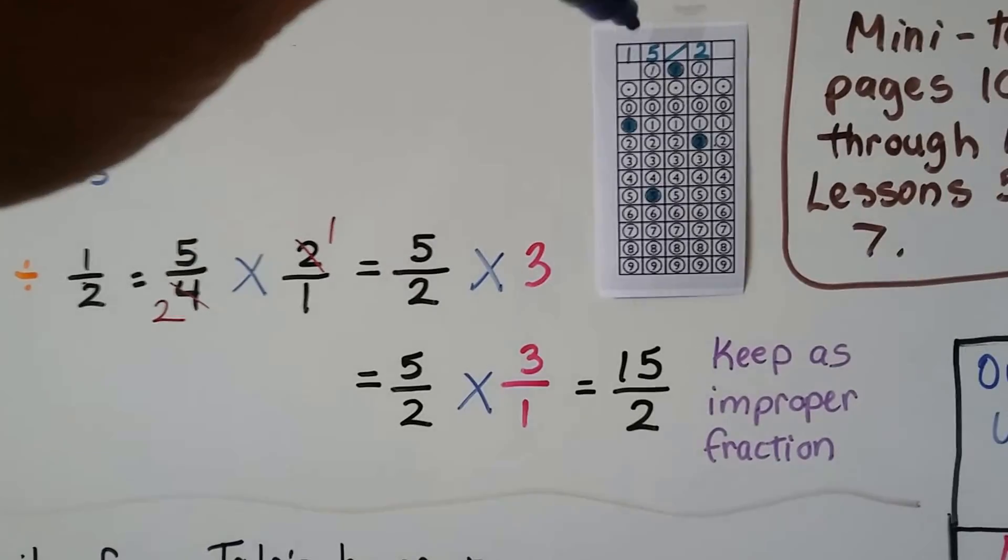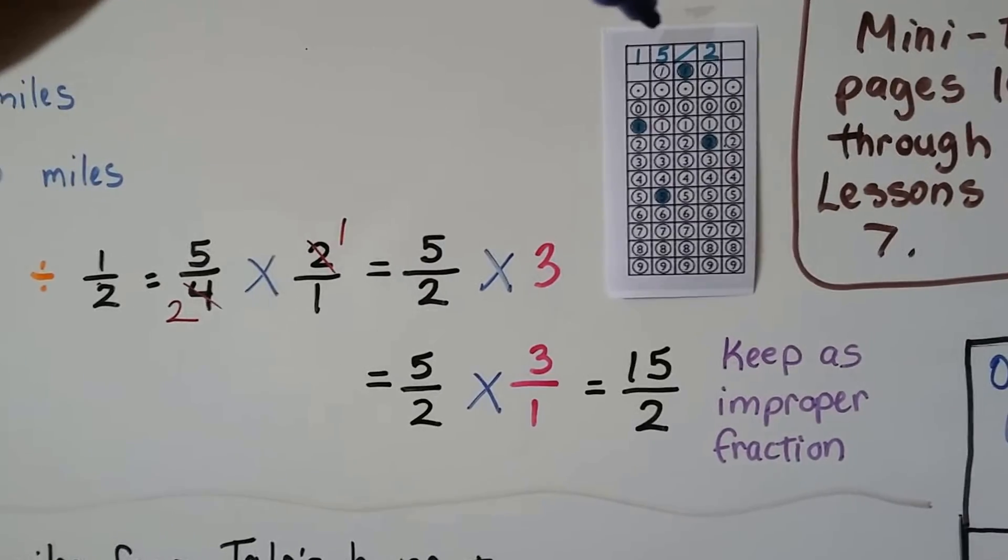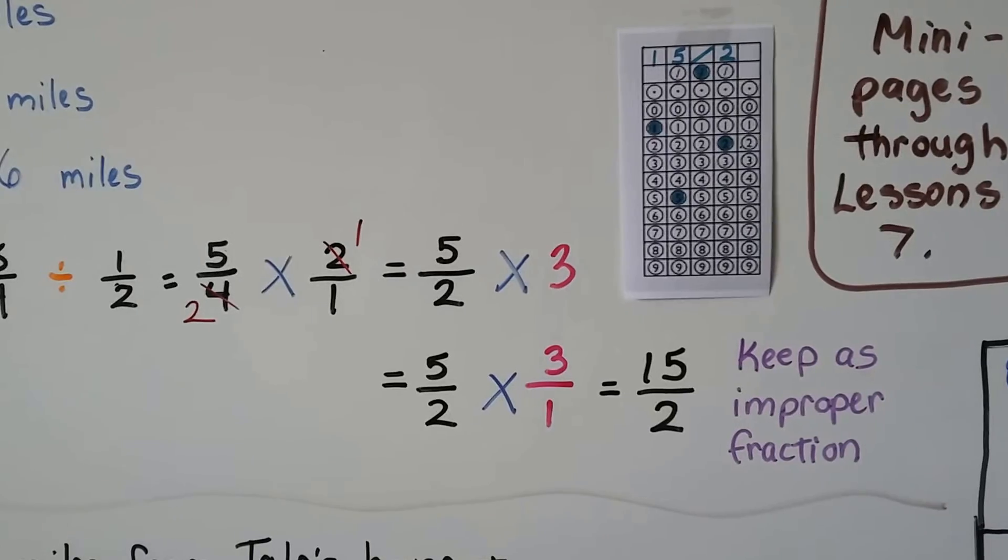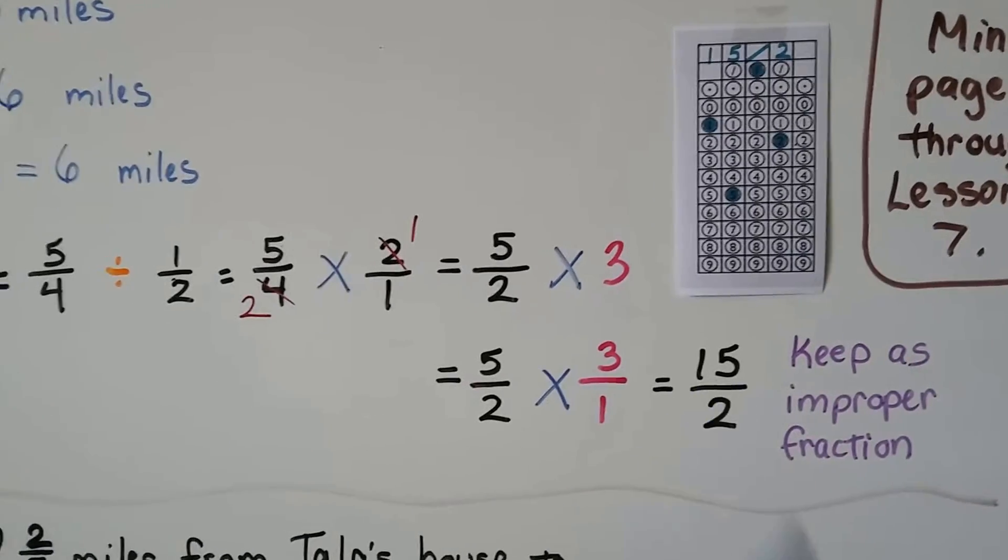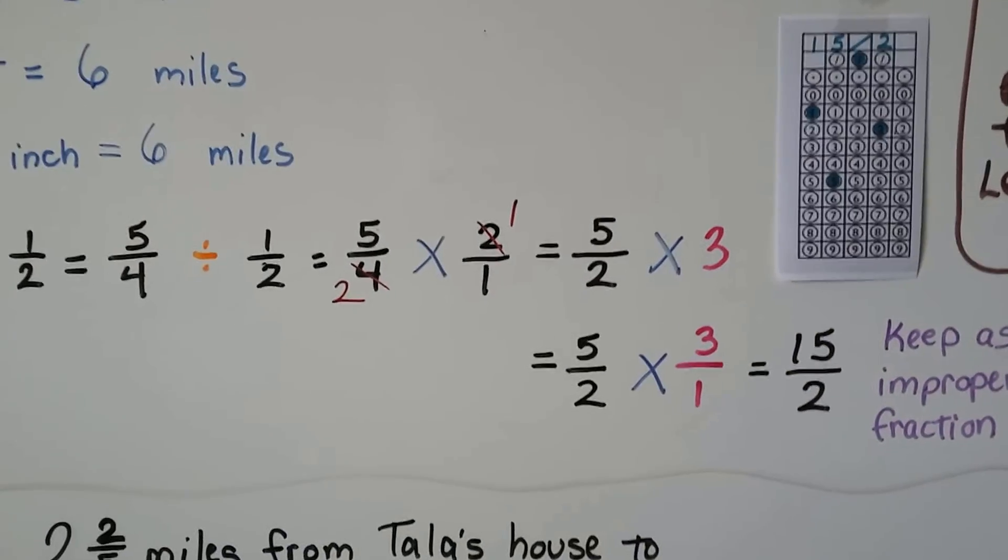That is how we're going to write it into the answer grid. We're going to write a 1, a 5, a slash, and a 2. You cannot write a mixed number. It's got to be kept as an improper fraction. Just make sure it's reduced.